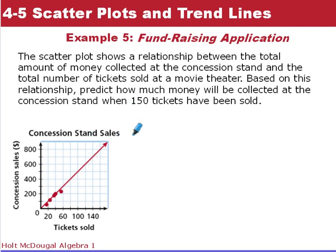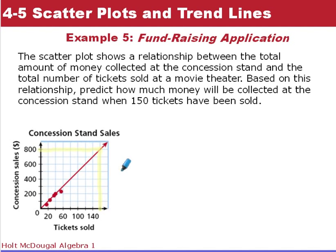Here we have a scatter plot showing the relationship between the total amount of money collected at the concession stand and the total number of tickets sold at the movie theater. We want to predict how much money will be collected when 150 tickets have been sold. We draw a straight line through as many points as possible, then go out to 150 on the x-axis, draw up to the trend line, and read across. It looks like we'd expect to see about $800 in concession stand sales at that point.